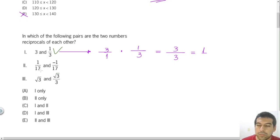In the second part, we have 1 over 17 and minus 1 over 17. If we multiply those, 1 over 17 times minus 1 over 17, we have 1 times minus 1, which will be minus 1, and 17 times 17 will be 289. This is far from 1, totally different from 1, so those are not reciprocals.